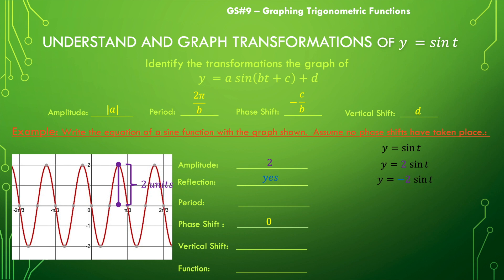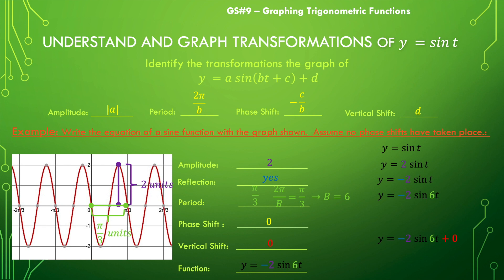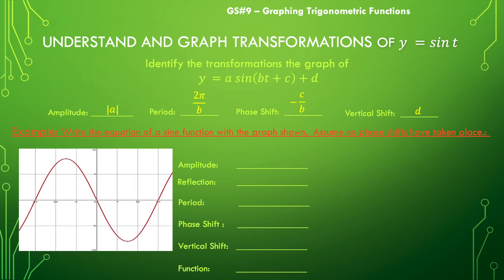The period of this function — the distance for one full cycle — looks like π over 3 units. We use that to solve for b: 2π over b equals π over 3, so b equals 6. We add that six as the coefficient of t. There's no vertical shift either because the midline is right on the x-axis, so our function is y equals negative 2 sine of 6t.